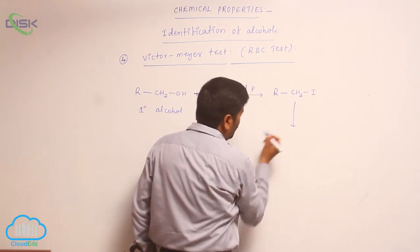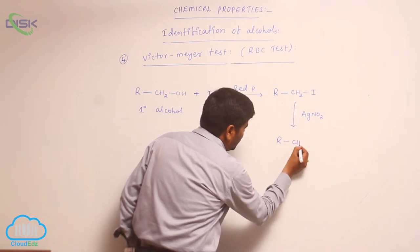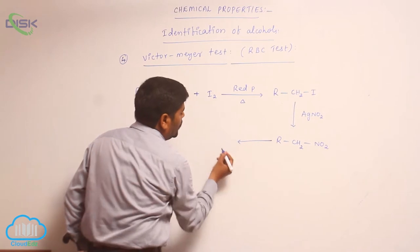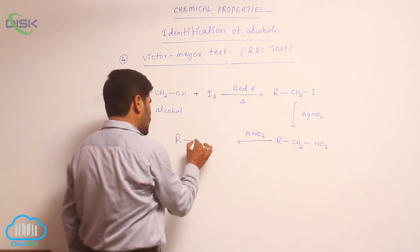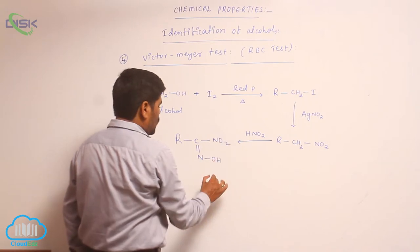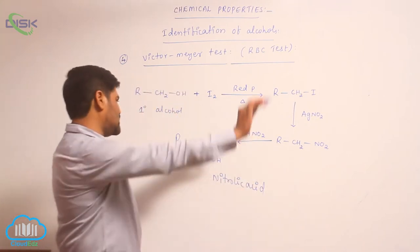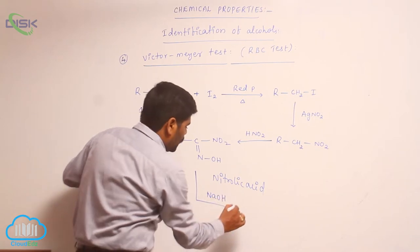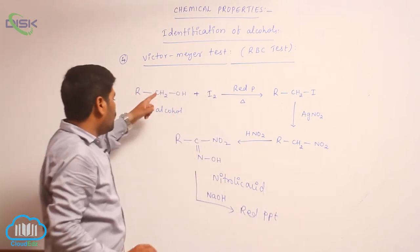This nitro compound reacts with nitrous acid (HNO₂). The nitrous acid then reacts with a base to form a red color precipitate. So, based on this test, the first-degree alcohol is identified by a red color in basic medium.